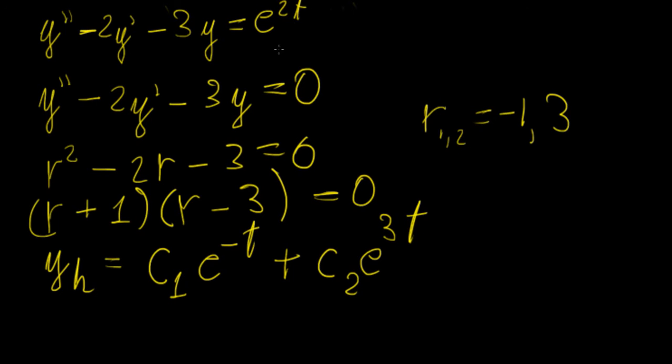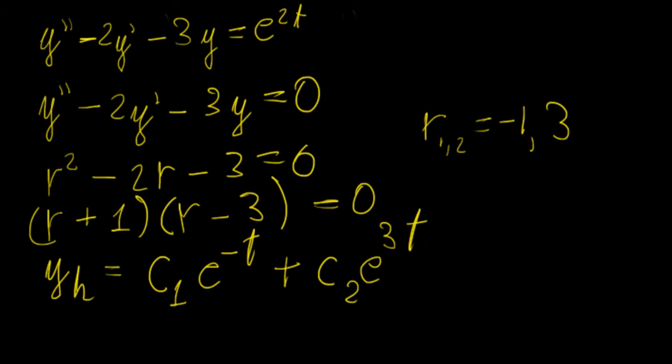Now the second part is going to consist of finding a function, a capital Y that is similar to this, but in this case we're going to actually use a constant term. So we're going to call it A e to 2t. The whole idea is that we're going to substitute the values of this function into here, and then find the value of that undetermined coefficient A, and that's where this method gets its name from.